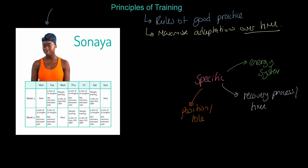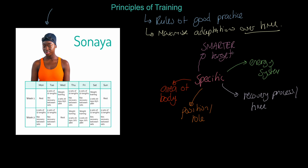Specificity can also apply to a person's position or role in their sport — for example, is Sanaya a sprinter or an endurance swimmer? It can be specific to an area of the body; as a swimmer, you'd expect her to work on her shoulders during strength training. And finally, training should be specific to Sanaya's SMARTER target.